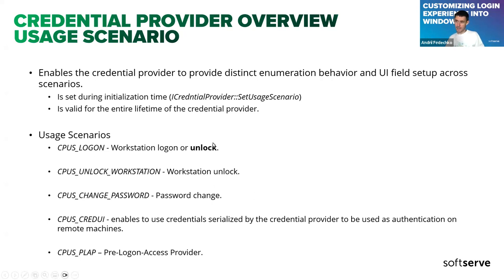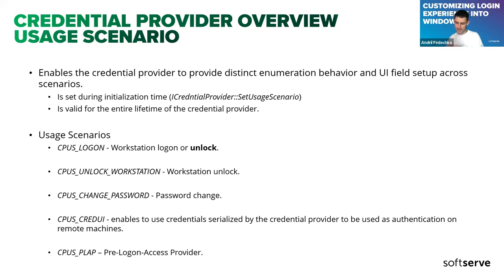However, there is also the Unlock Workstation scenario. Windows 10 allows user switching, but this can be configured through group policy or registry to forbid user switching entirely. If user A locks their workstation, only user A can unlock it. In this case the system will explicitly tell your provider this is an Unlock scenario, and you need to handle it accordingly. Next is Change Password — obviously when you have to change your password.